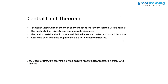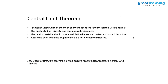A teaser: when we talk of the mean, it is normally distributed. But when we talk of variance, it is not normally distributed — variance follows a chi-square distribution, not a normal distribution. We'll explore why and how when we get there.